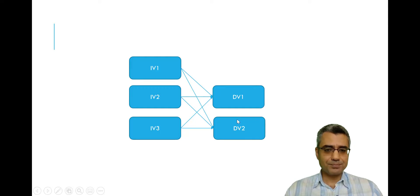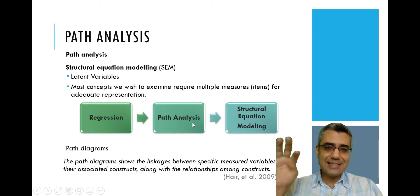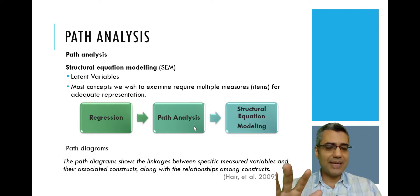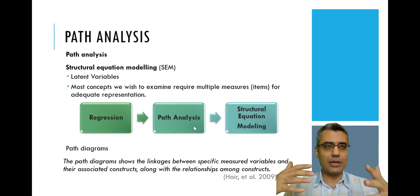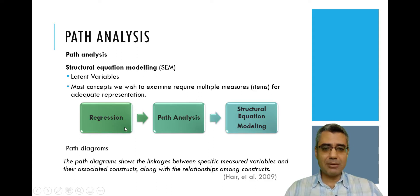This is the reason we have path analysis. Path analysis is an extension of regression analysis, and it addresses the limitations we discussed: in path analysis you can have several dependent variables, and each variable can play both roles of independent and dependent variable. So why do we need structural equation modeling if path analysis already overcomes those limitations?